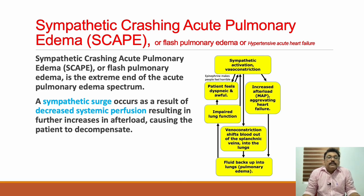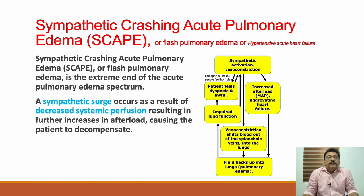SCAPE occurs due to a sympathetic surge — sympathetic overactivity caused by decreased systemic perfusion. When the ventricle fails, the systemic circulation senses reduced flow and sympathetic activity becomes over-driven. This over-activated sympathetic surge produces further complications in pulmonary edema. In SCAPE, you have tachycardia and hypertension, whereas most other pulmonary edema patients present with hypotension and shock.